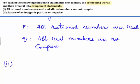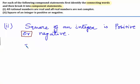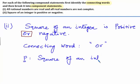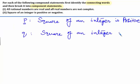Let us move on to the second part. The statement reads: square of an integer is positive or negative. Here, OR is the connecting word. The connecting word is OR. The first of the two component statements is: square of an integer is positive. And the second statement is: square of an integer is negative.